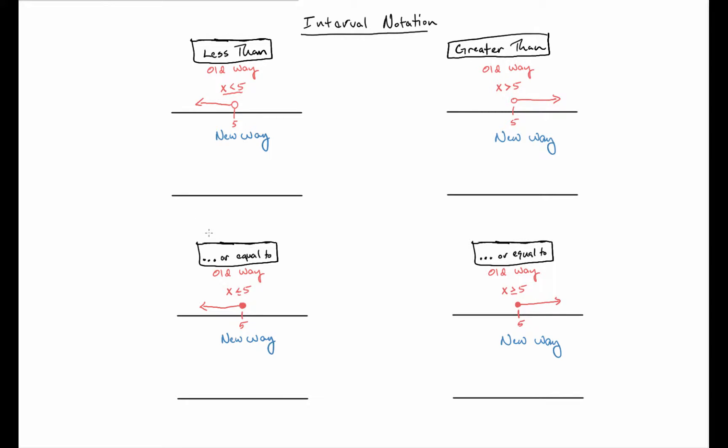Now it also has to do with graphing. I put examples of how you would have graphed things in the past using open and closed circles to represent whether it's less than, greater than, less than or equal to, and all that. Now I'm going to show you the new way of doing this. It'll help if we look at the graph first and then I'll write it in interval notation.